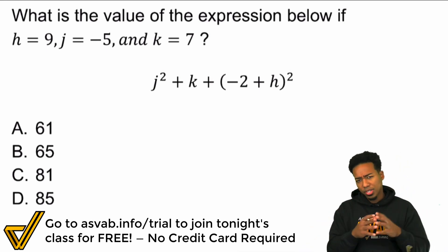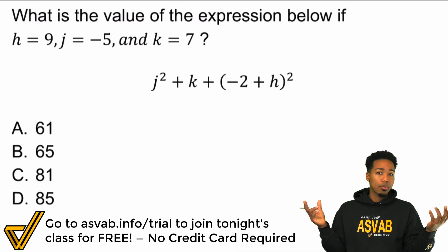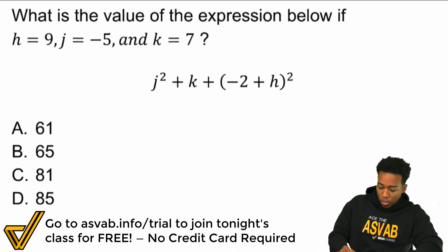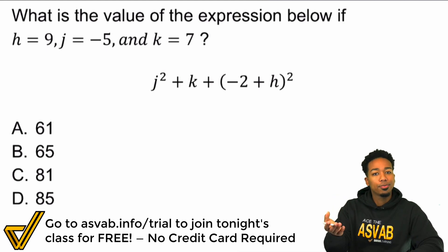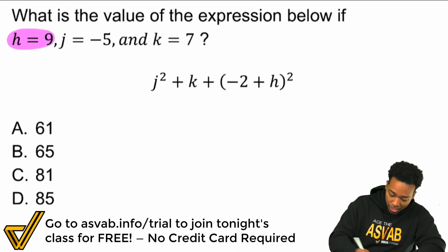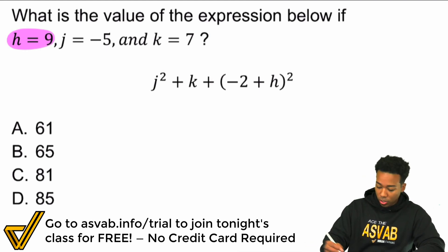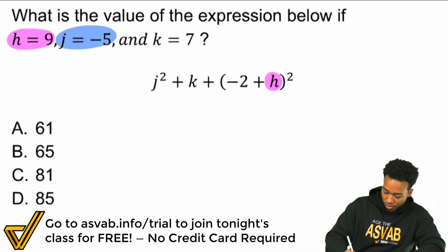So here's how we do this. This is just like the order of operations. The only difference is that you can't really evaluate this, you can't find the value if you don't know what these letters are, what these variables are. So what you're going to do, nice and easy, first up is just going to be to plug in those values. You see that you have h is 9 right there. You have j is negative 5 right there. And then you have k equals 7 right there.